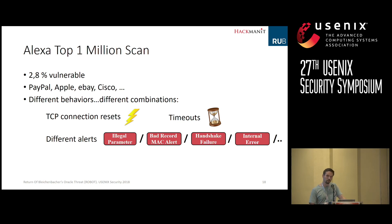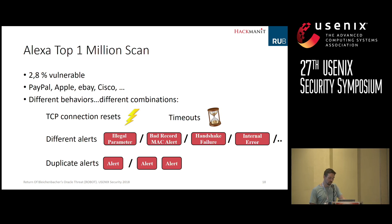What was also interesting from my perspective was that we saw duplicate alert messages. In some cases, implementations attempted to implement the countermeasure — they sent only a general alert message like bad record MAC, always the same. But when the client key exchange was PKCS1 valid, it sent only one alert message, and when it was invalid, it sent two alert messages.